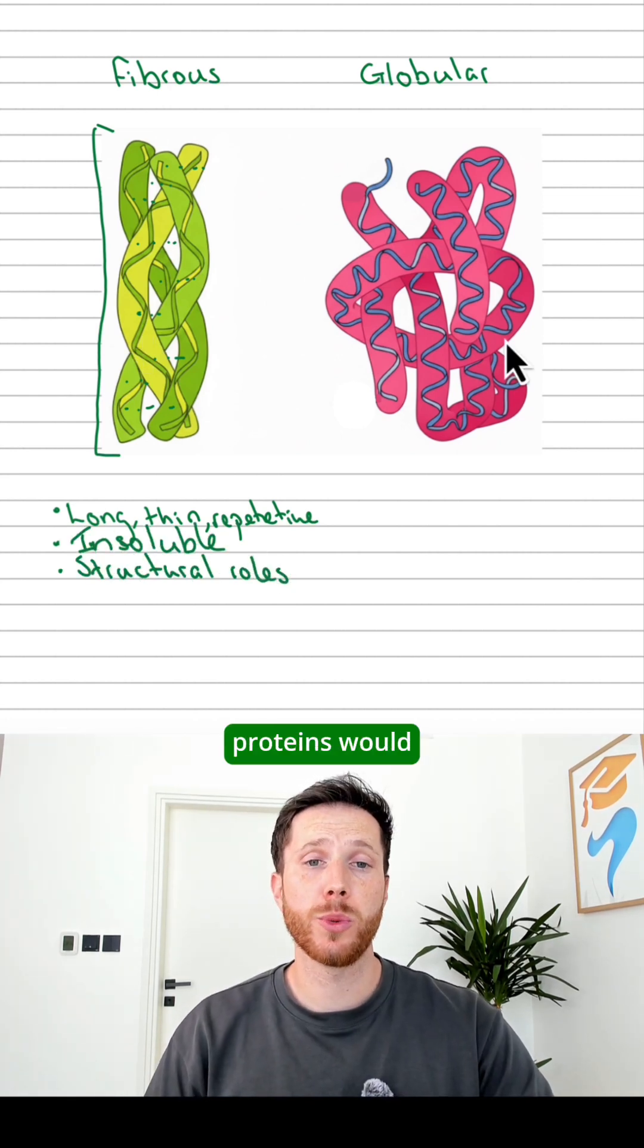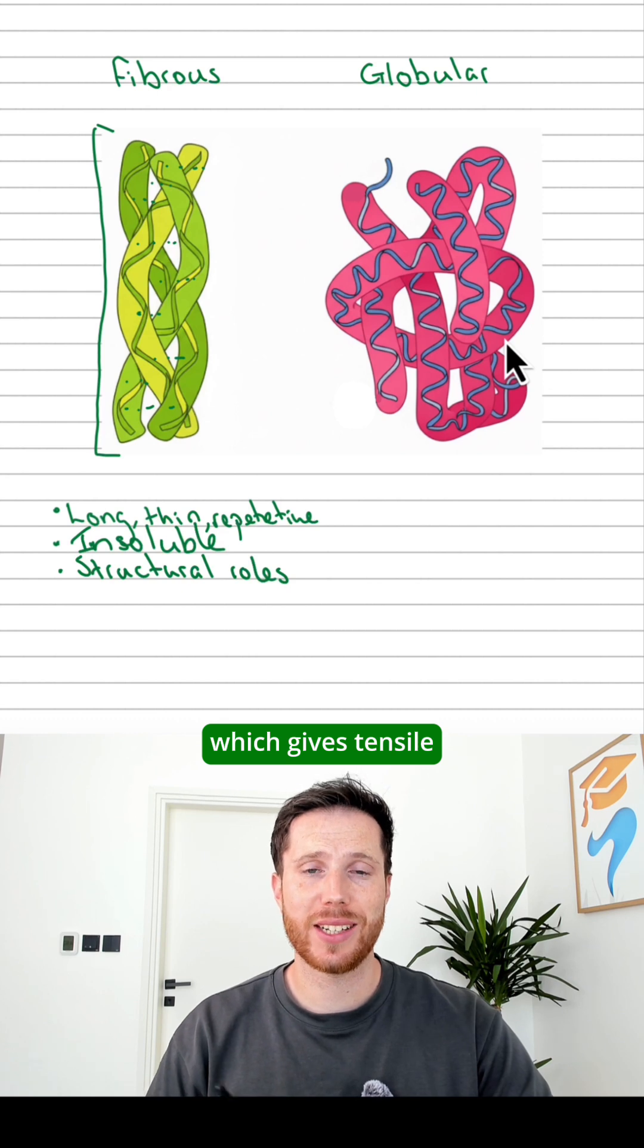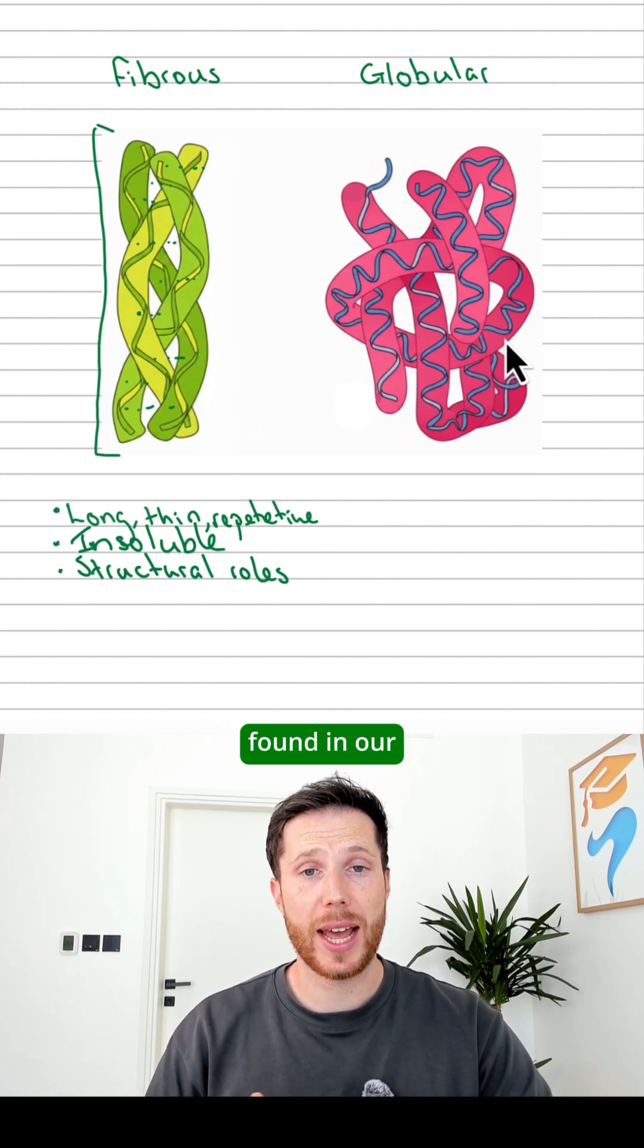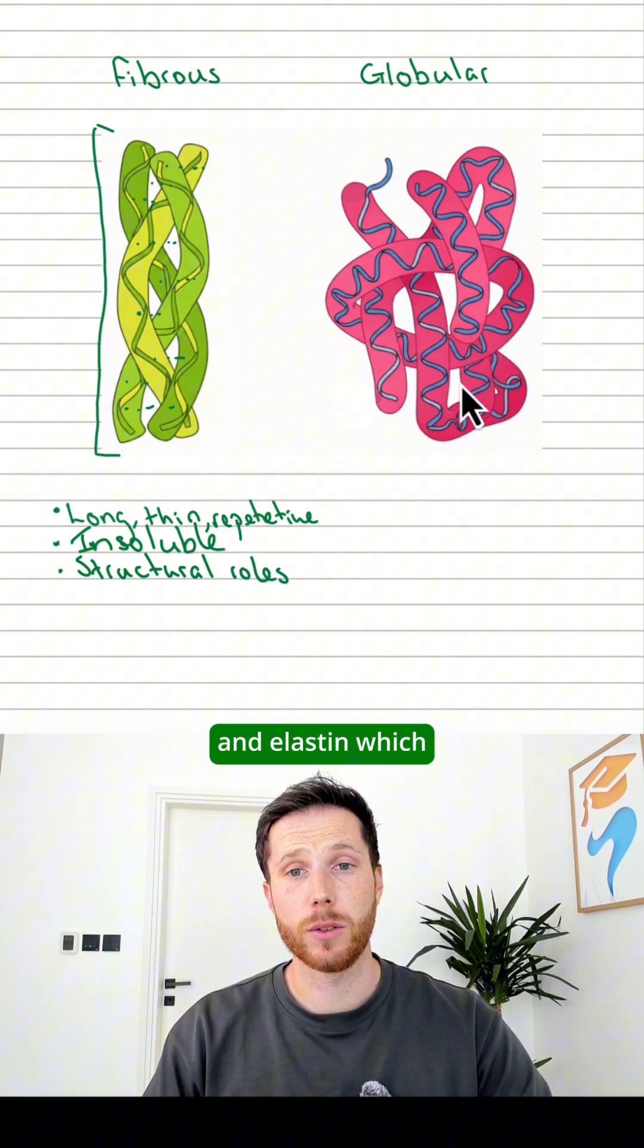So examples of fibrous proteins would include things like collagen, which gives tensile strength to our connective tissue, keratin, which is found in our hair and our nails, and elastin, which is found in our tissues.